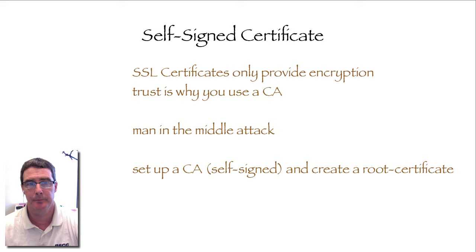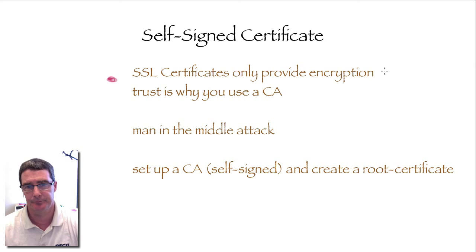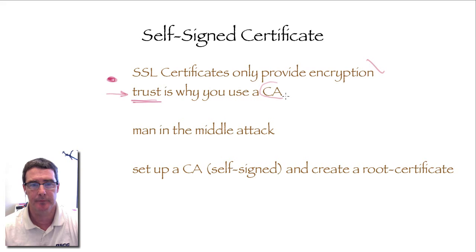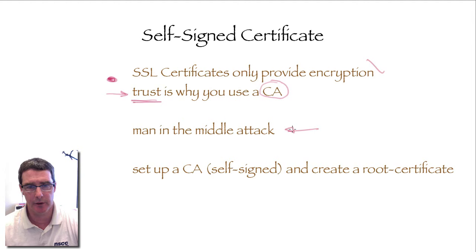Let's take another look at self-signed certificates. The number one feature of an SSL certificate is that it provides encryption — and that's true whether it's self-signed or comes from a CA. Any certificate will provide encryption using a public key. The trust issue is why you use a certificate with a CA. Because if you use a self-signed certificate, you are prone to something called a man-in-the-middle attack.